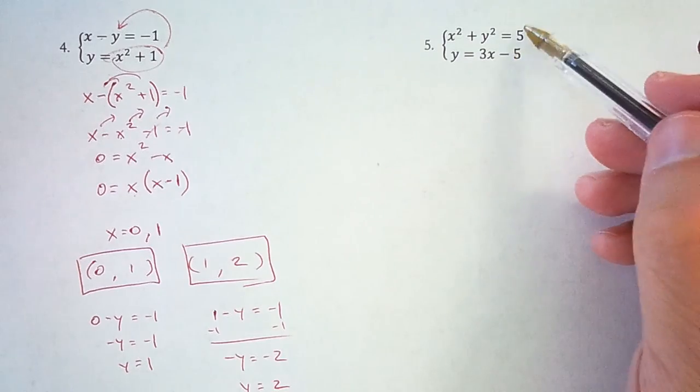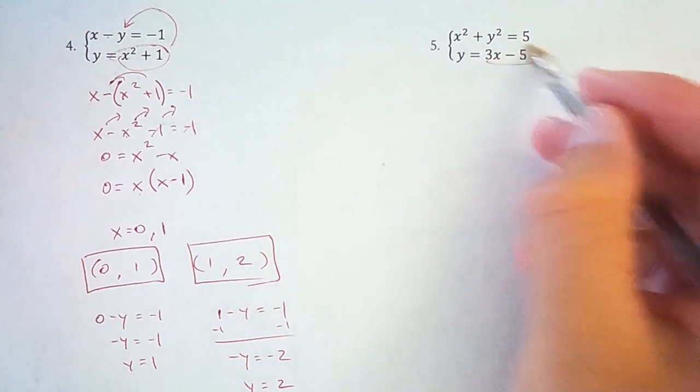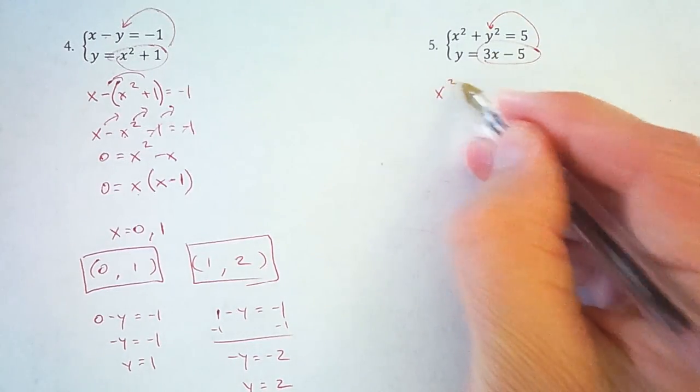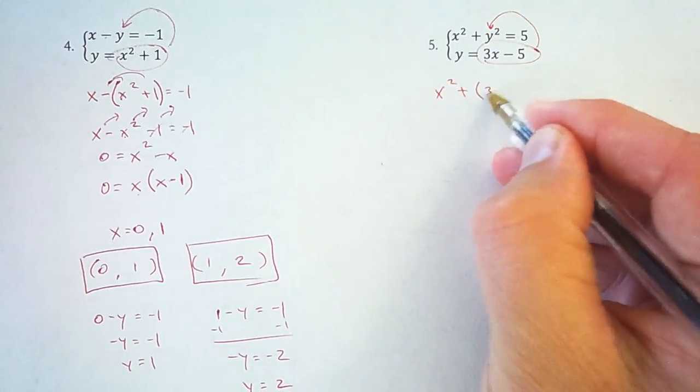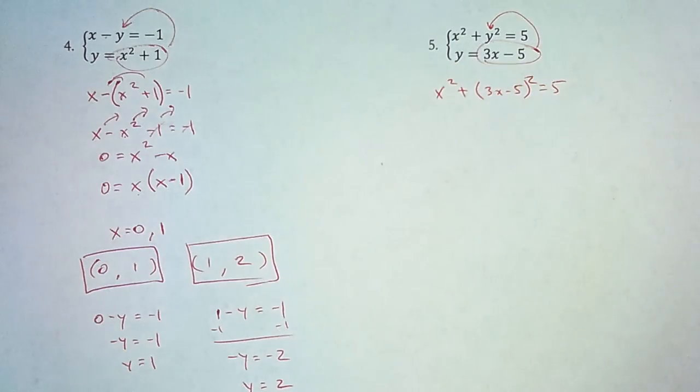Now let's do the same here for this line and circle. So I've already got y by itself. So let's plug that in right there. So I've got x squared plus and then y becomes (3x minus 5) squared equals 5.